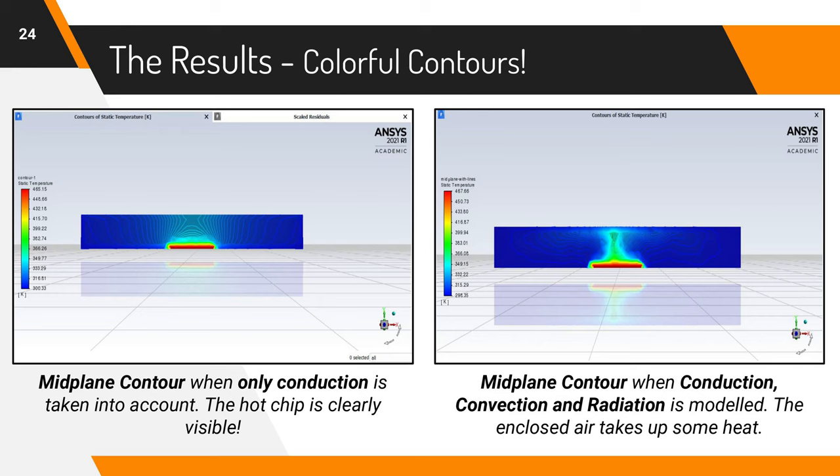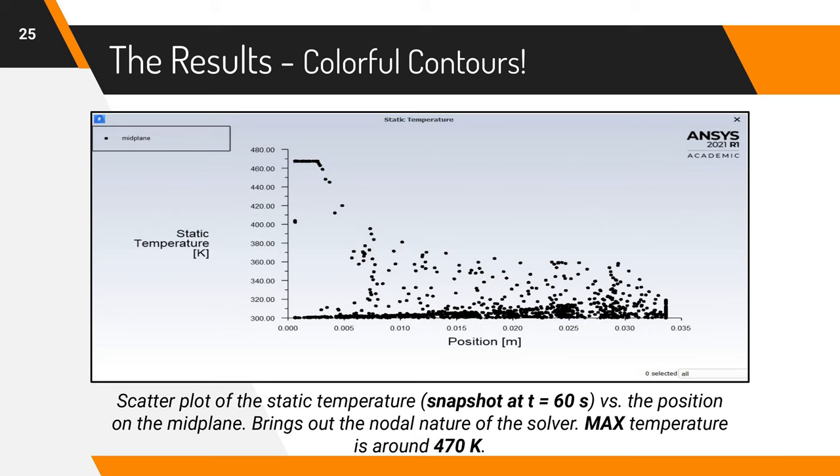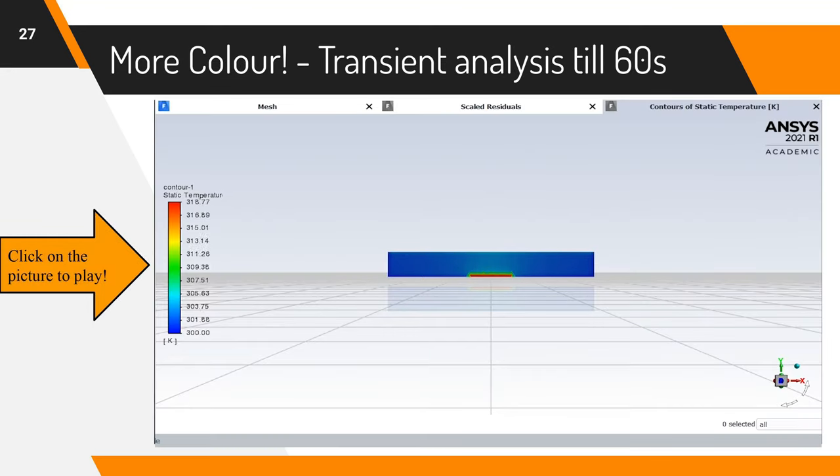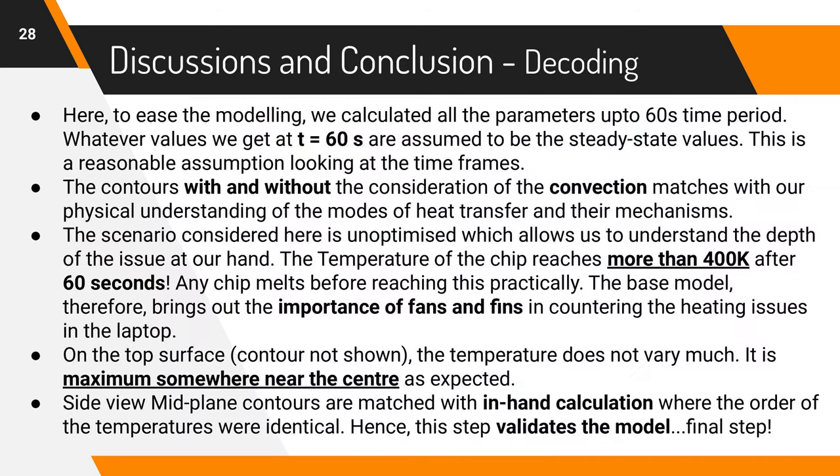We studied this simple model in depth to understand the effects of various modes of heat transfer. This picture shows the temperature contours in the 2D midplane when only conduction is taken into account. A hot chip is clearly visible. Adding convection and radiation leads to a better contour as shown here. But we finally need a temperature value. This scatter plot shows chip temperature reaching as high as 470 Kelvin at t equal to 60 seconds. These are the free convection flow contours swirling in the high temperature region. We also managed to get a time variance analysis in the form of a video. We can see the spread of heat as time proceeds. This analysis brings out the importance of heat dissipation techniques and how their absence can easily lead to melting of the chip. The maximum temperature was obtained somewhere near the center as expected.